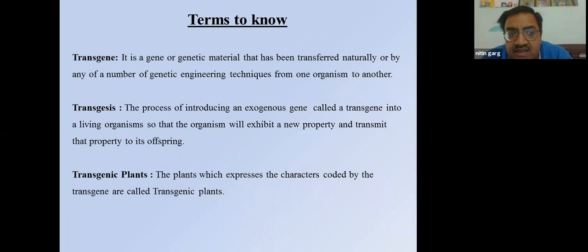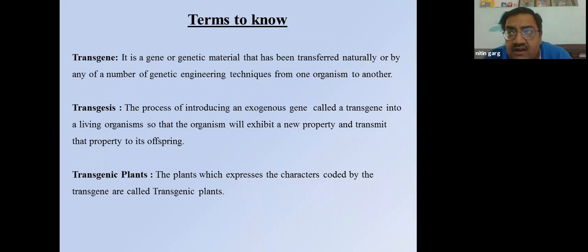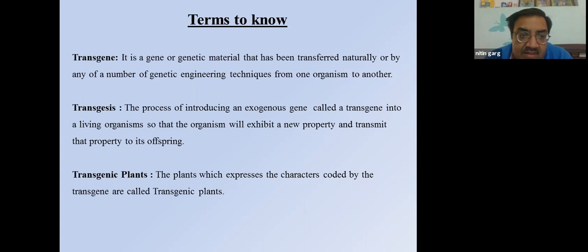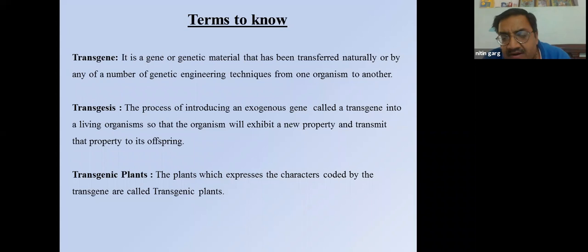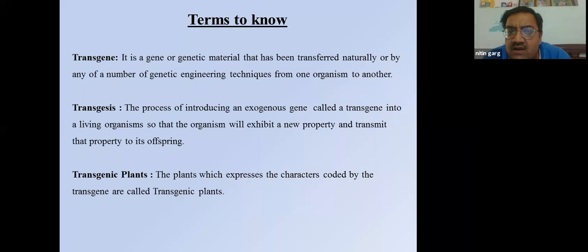Before starting genetic engineering, there are three most important terms. First is transgene: the genetic material or gene which we are going to transfer into a particular plant or organism, using either direct gene transfer, natural gene transfer, or any gene transfer technique. Second is transgenesis: how we do it. Third is transgenic plant: the particular plant into which the gene is transferred and, importantly, that transferred gene must be expressed in that plant.